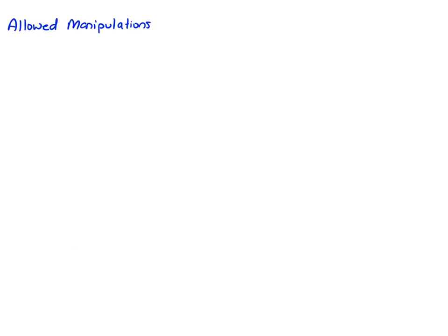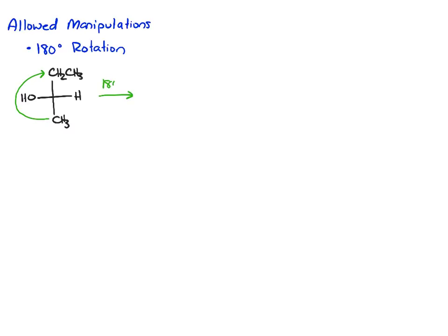There are a couple of allowed manipulations you can do with a Fischer projection. The first is a 180-degree rotation. I can take this molecule and rotate it 180 degrees so that the methyl comes to the top and the ethyl goes to the bottom. The reason this is allowed is that it doesn't violate the Fischer projection definition. In the original structure, the methyl and ethyl are vertical and pointed back. Even after the rotation, they're still vertical and still pointed back.